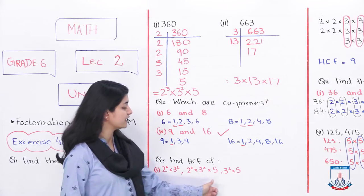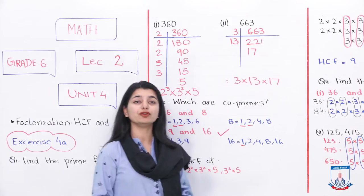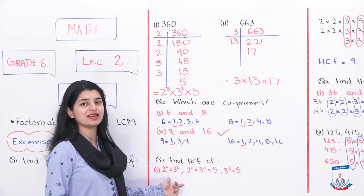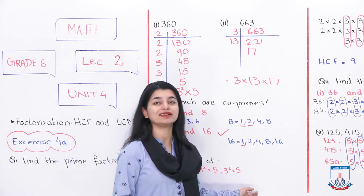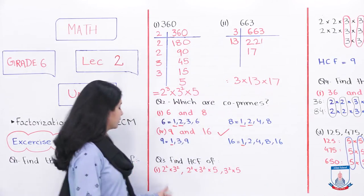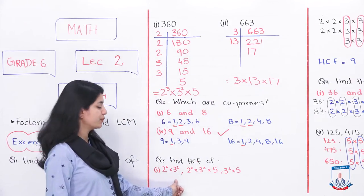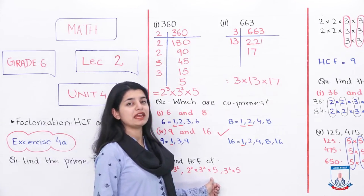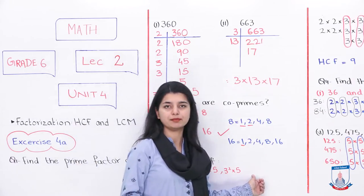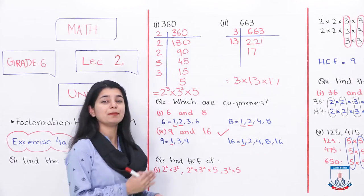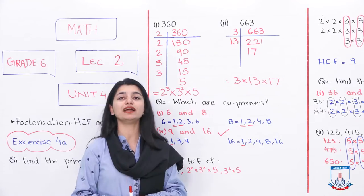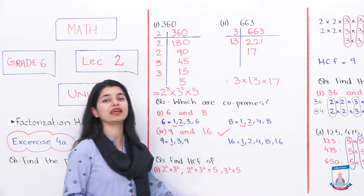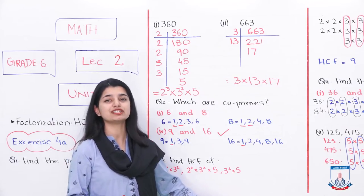Question number 3: find the HCF. They have given you numbers in symbolic factorization form and you have to find the highest common factor. If you look at it: the first number is 2 squared multiplied by 3 squared; the second is 2 squared multiplied by 3 squared multiplied by 5; the third is 3 squared multiplied by 5. You can expand these numbers fully and then easily find the HCF from among them.